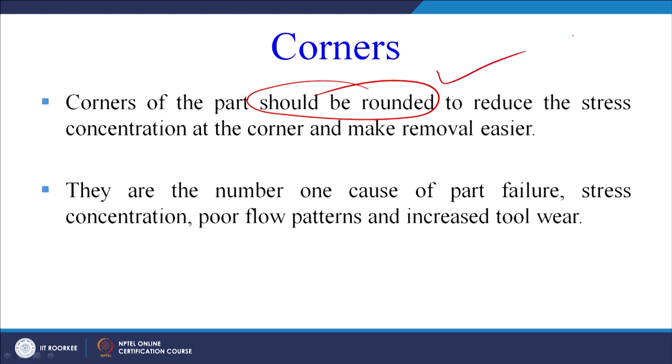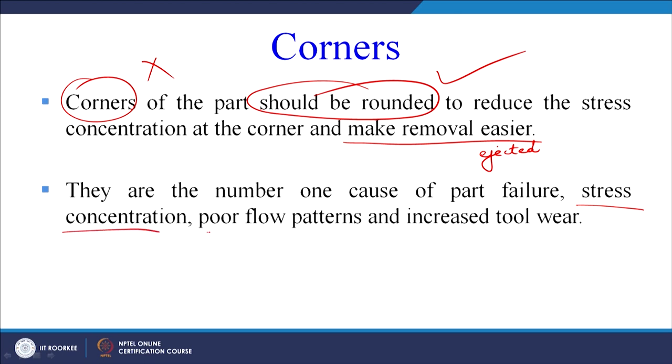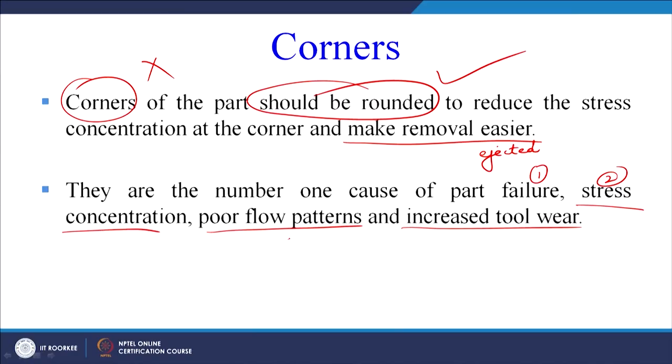Regarding corners: the corners of the part should be rounded to reduce stress concentration and to make part removal from the mold easier. Sharp corners are the number one cause of failure, stress concentration, poor flow patterns of the molten plastic, and increased tool wear. If you have a very sharp corner, the plastic repeatedly contacts the die corner, increasing tool wear.